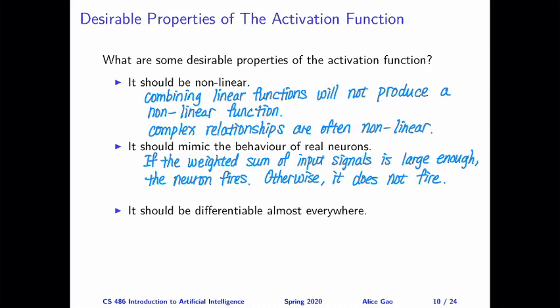The third desirable property is that the activation function should be differentiable almost everywhere. This comes from the perspective of learning — we are going to train the neural network using optimization algorithms such as gradient descent, and these algorithms require the function to be differentiable because we need to calculate the gradient to decide which direction to change parameter values.